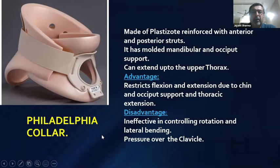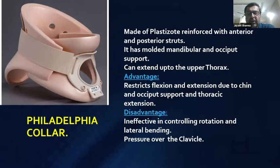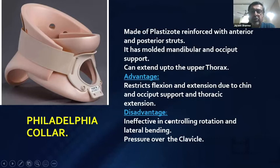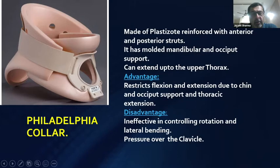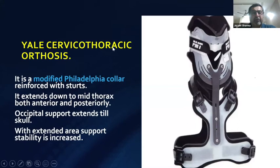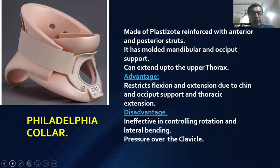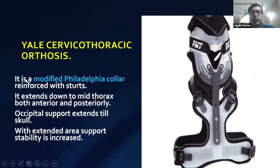The Philadelphia collar is made of Plastazote reinforced with posterior and anterior struts. It has a molded mandibular and occipital support, so it does not cause irritation over the neck or clavicle area. It can extend up to the upper thorax as a modification. Its advantage is that it restricts flexion and extension due to chin, occipital support, and thoracic extension. It is ineffective in controlling rotation and lateral bending. The middle hole is made for tracheostomy access. A cervicothoracic orthosis, the Yale orthosis, is a modification of the Philadelphia collar with a thoracic extension.